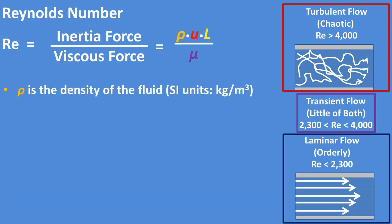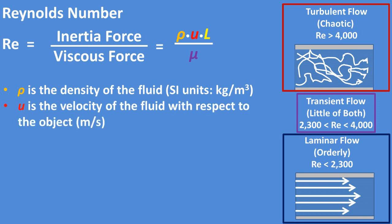Breaking down the Reynolds number equation further, it is the density or mass of fluid divided by the volume of fluid in kilograms per meter cubed, multiplied times the velocity of the fluid relative to the object the fluid is moving through in meters per second.